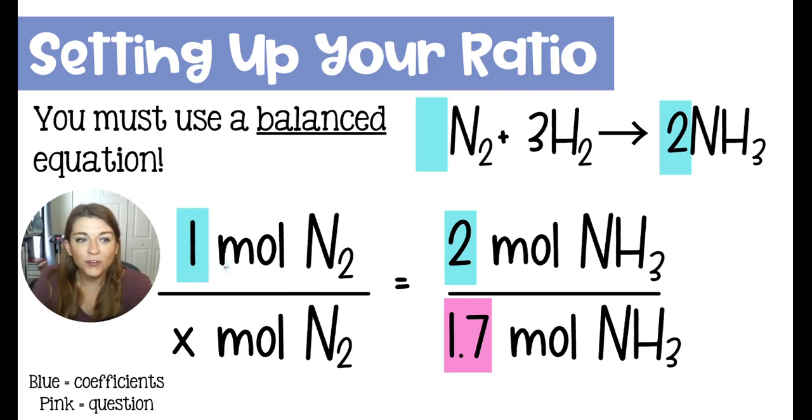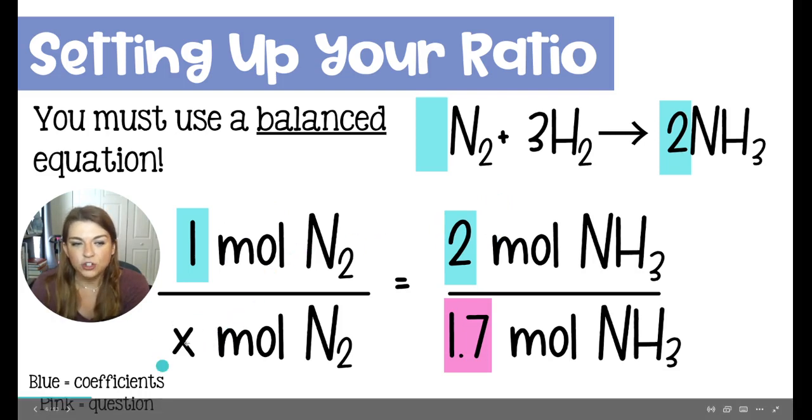So like I've mentioned before, every time I set up a ratio, I just talk it out to myself. So I would say for every one mole of nitrogen, I need two moles of ammonia. How many moles of nitrogen would I need to get 1.7 moles of ammonia?